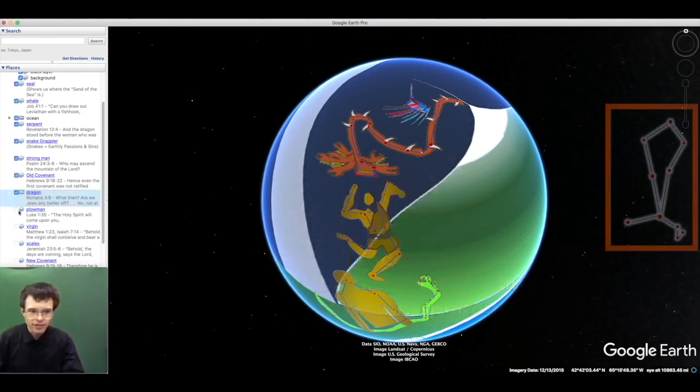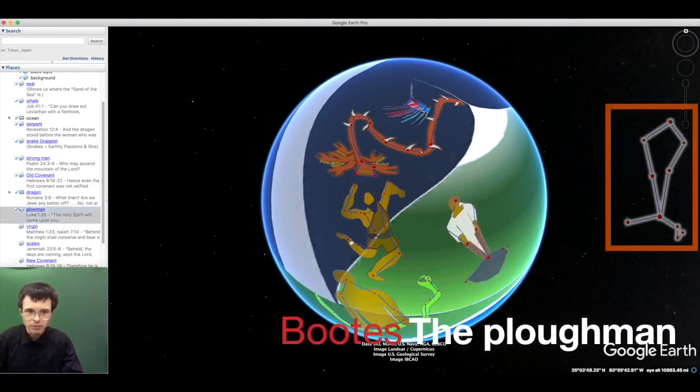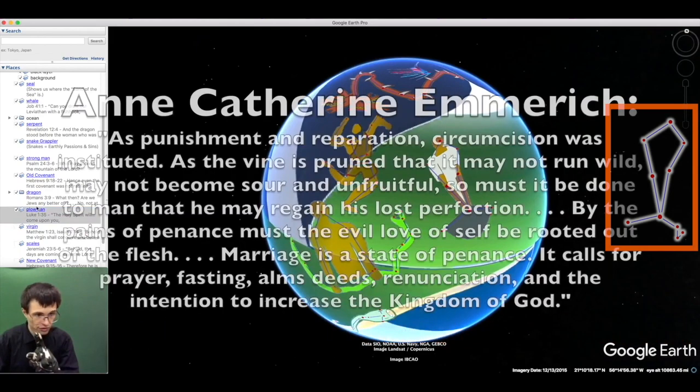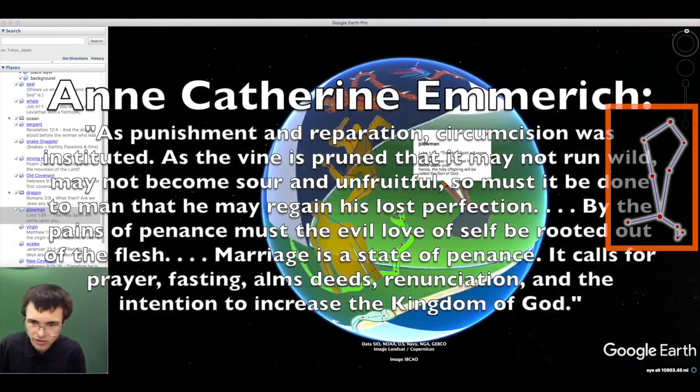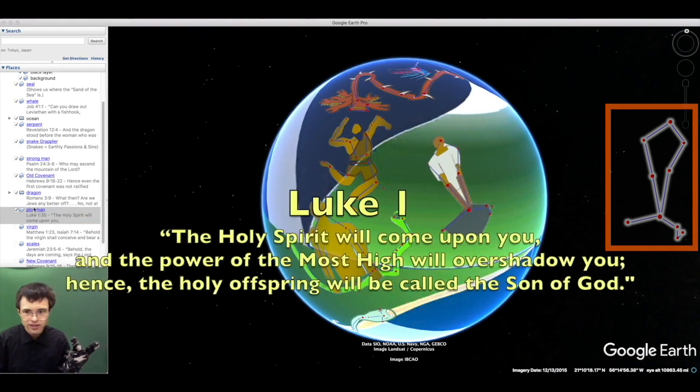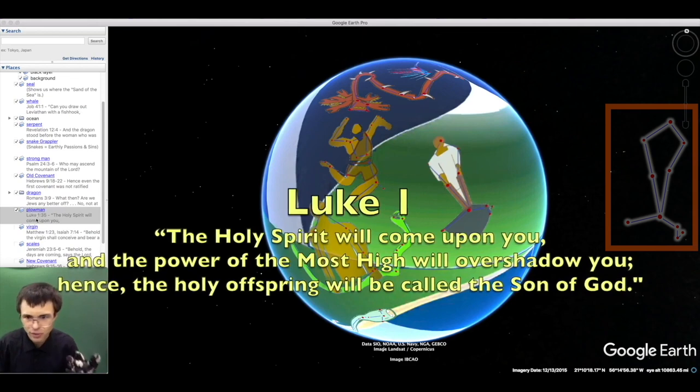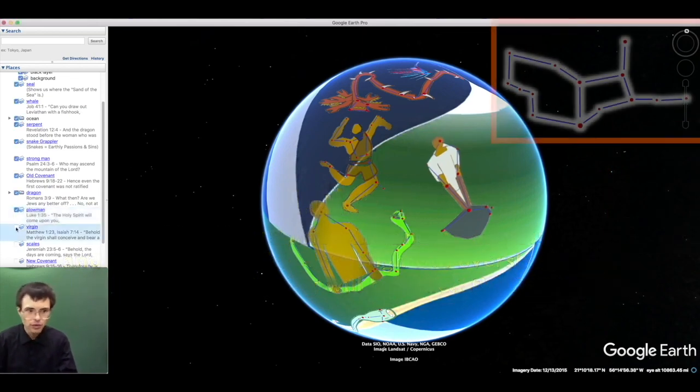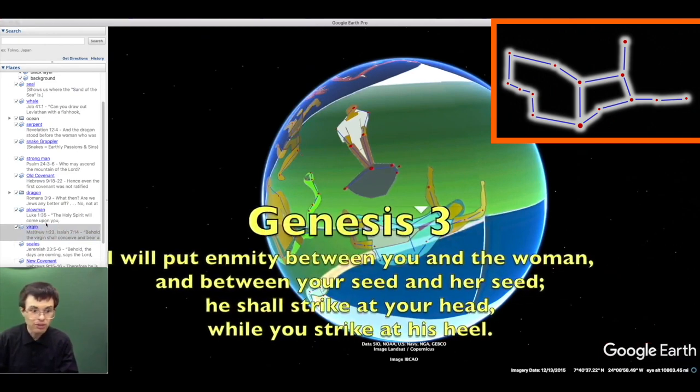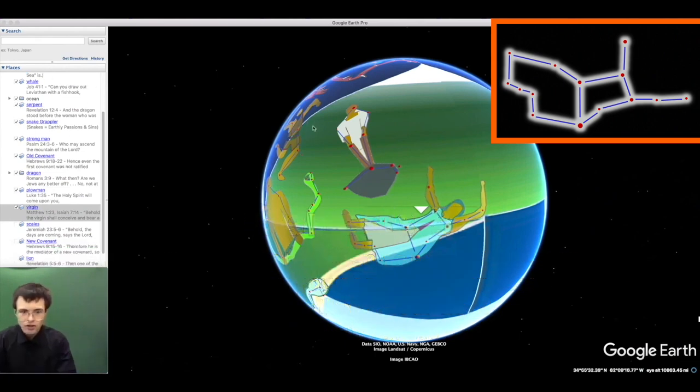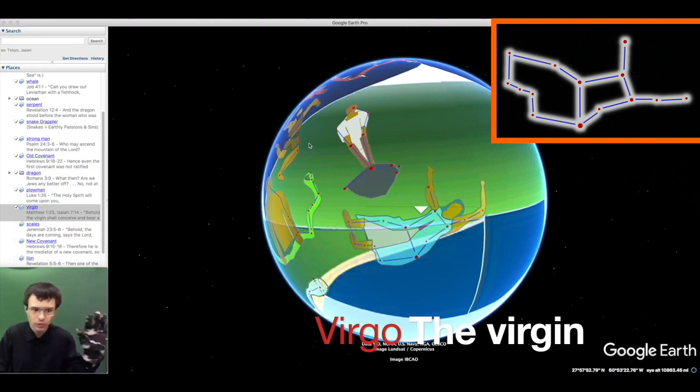But there was another adversary against the dragon, who laid the seed of his eventual overthrow. And that is the plow man, who symbolizes both hard work, the Jewish line working hard by the sweat of their brow for centuries to work their way back from original sin, and restore human nature from concupiscence. And also, the Holy Spirit. The Holy Spirit will come upon you, and the power of the Most High will overshadow you. Hence the holy offspring will be called the Son of God.